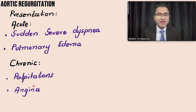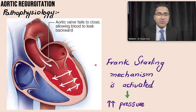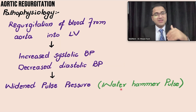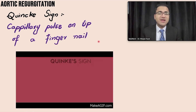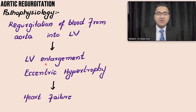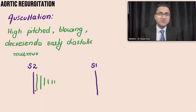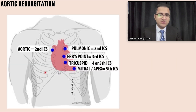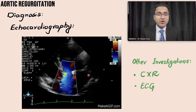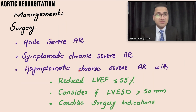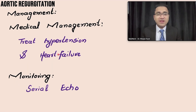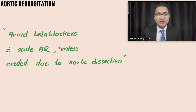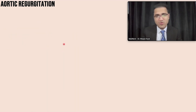Dyspnea is the common acute presentation; in chronic cases patients develop palpitations. Pounding pulses are generated via the Frank-Starling mechanism — increased volume causes increased force of contraction, raising systolic blood pressure, while diastolic blood pressure falls. Clinical signs include dancing carotids, pistol shot sounds, Quincke sign, De Musset sign, and Rosenbach sign. Dilated cardiomyopathy develops over time. A high-pitched blowing diastolic murmur and Austin Flint murmur are characteristic. Echocardiography confirms diagnosis; surgery is the mainstay; anticoagulation follows valve replacement. Avoid beta blockers and intra-aortic balloon pump.